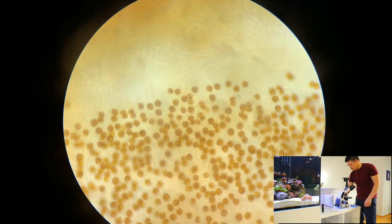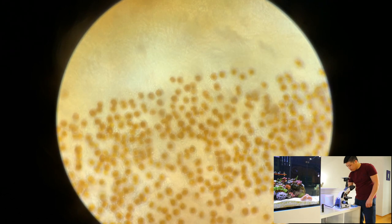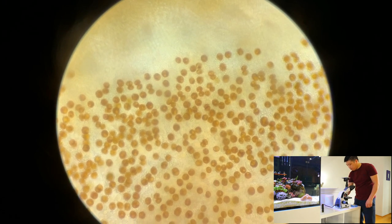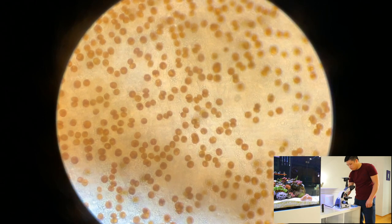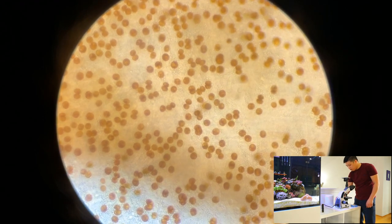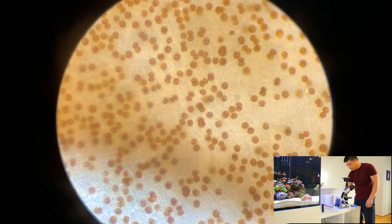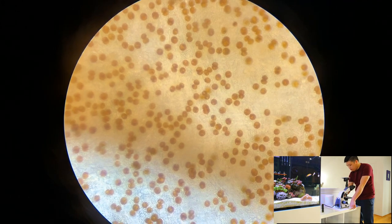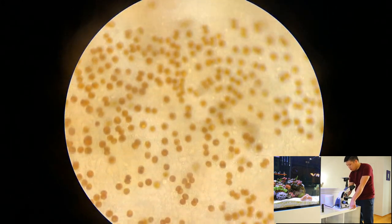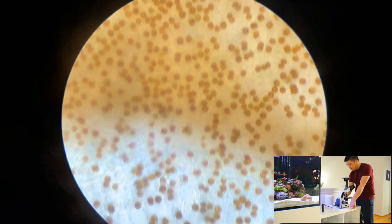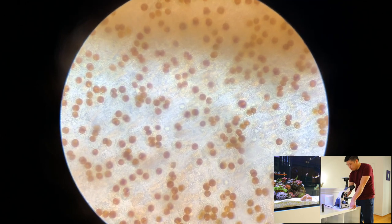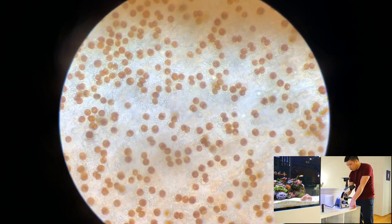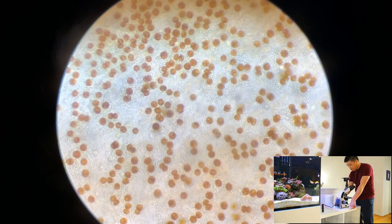Oh, do you guys see that? I believe those are zooxanthellae actually inside the tissue. Everywhere in the tissue you just have all these zooxanthellae. And if you watched last week's video, we actually ended up seeing that there were a lot of dinoflagellates existing in the tank. And what's actually interesting is that zooxanthellae, which lives inside the tissue of the coral and has a symbiotic relationship with the coral, is a type of dinoflagellate.